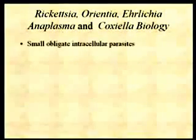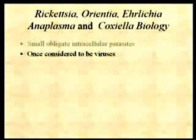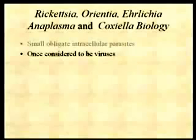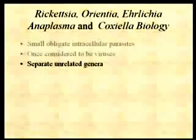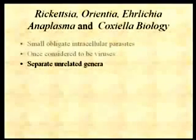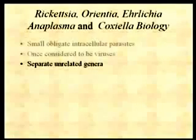A little bit about the biology of these organisms. We'll consider these as a group because their biology is pretty similar — Rickettsia, Orientia, Ehrlichia, Anaplasma, and Coxiella. These are all obligate intracellular parasites. Just like the chlamydia, these things were originally thought to be viruses, but they're not. They're true bacteria — they contain DNA, RNA, and ribosomes. And we know now that all of these are completely unrelated genera, although their biology and the diseases they cause are similar.